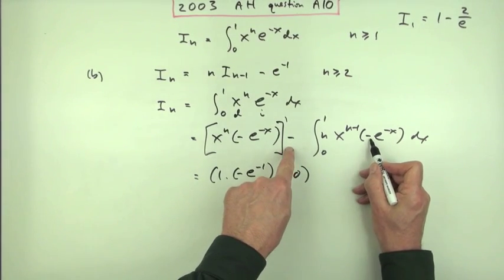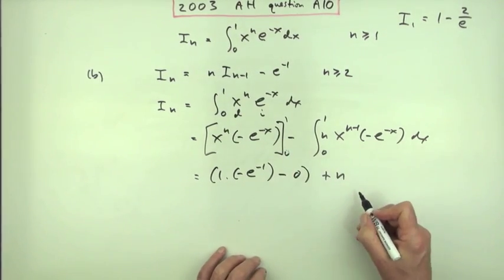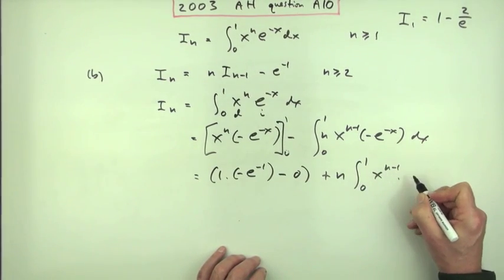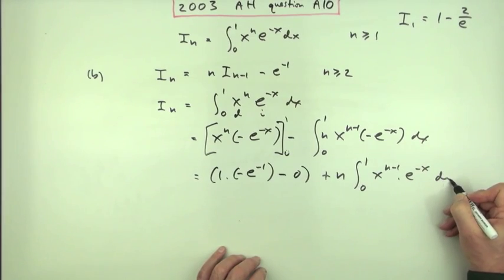But this part, I can take out that negative and make that a plus. Take out that multiple, n, and be left just with x to the n minus 1 times e to the negative x dx.